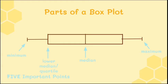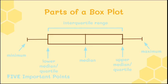Next there's the lower median, also called the lower quartile. That is the median of the lower half of the data set, because the median splits the data set into a lower and upper half. The lower median is the median of the lower half, and that's going to be where the box starts. Then there's the upper median, which is the median of the upper half of the data values — that's where the box ends. The whole area the box covers is called the interquartile range, which is the upper median minus the lower median.